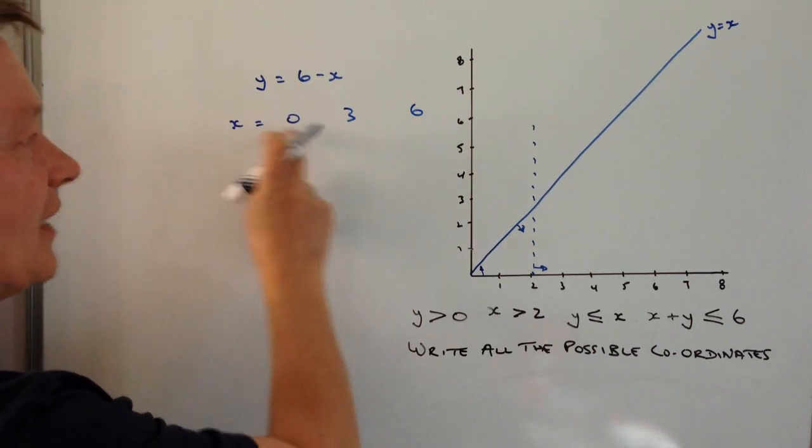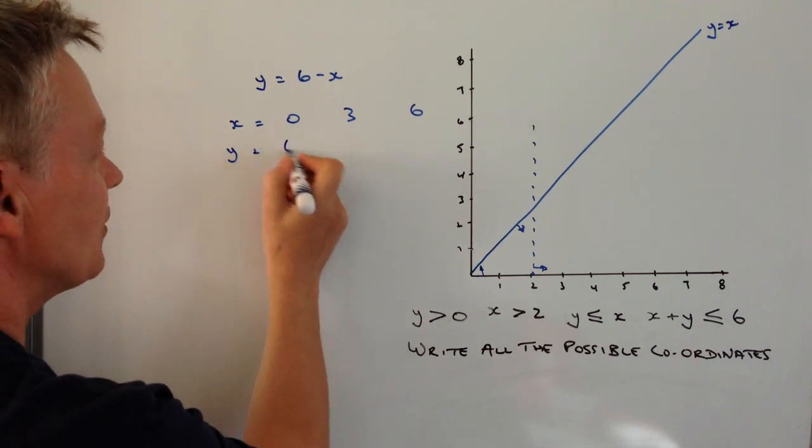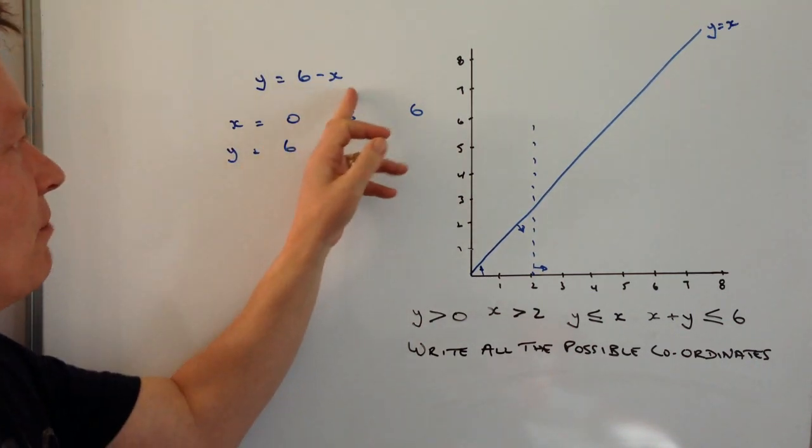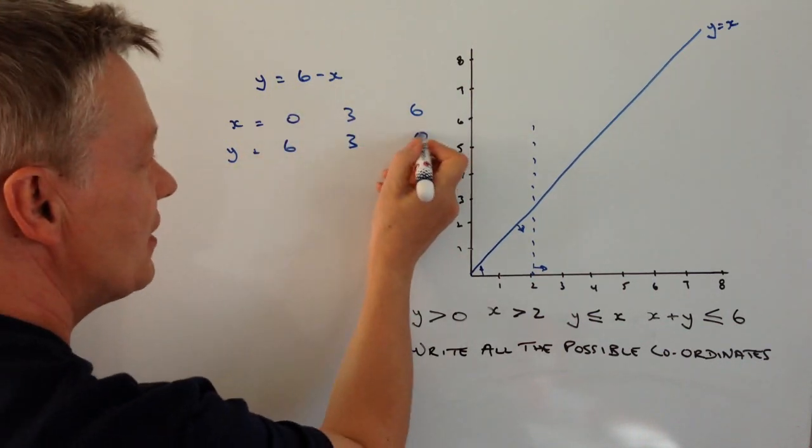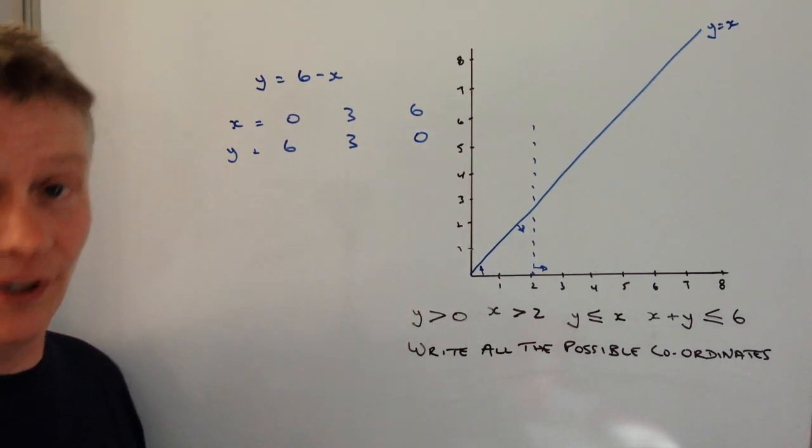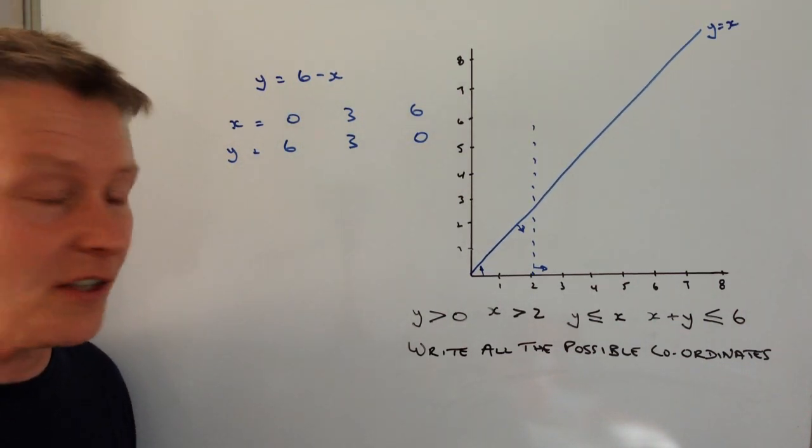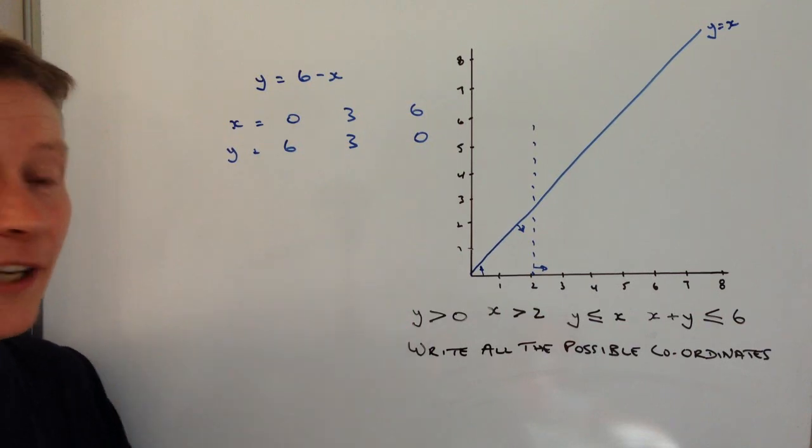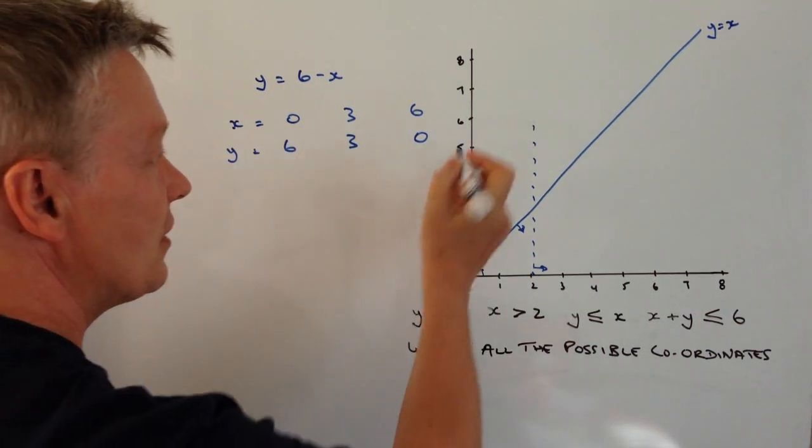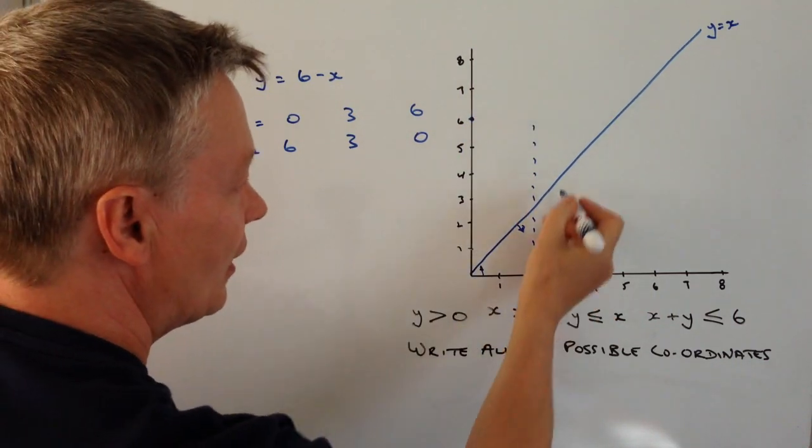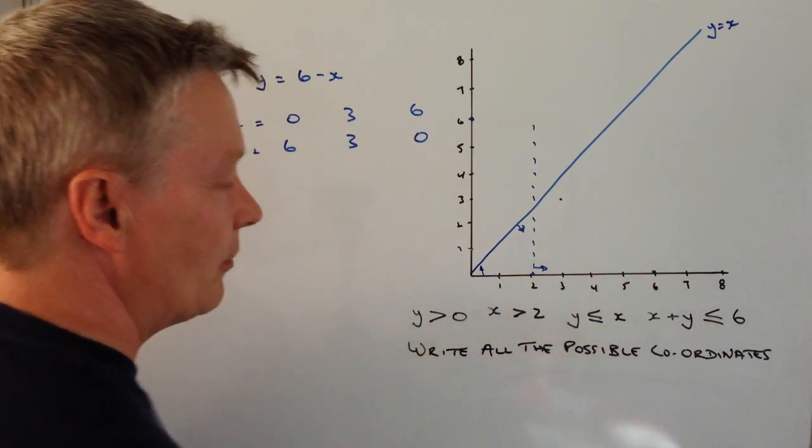Well, when x equals zero, six minus x means that y equals six. Six minus three is three, and six minus six is zero. So it allows me then to plot the coordinates. And if you've had some experience with plotting linear equations onto the graphs, that should be okay for you. So x, six, zero and six is going to be here. Three, three is going to be about all about there. And six zero is going to be there.